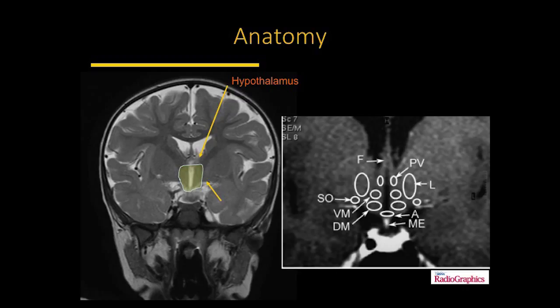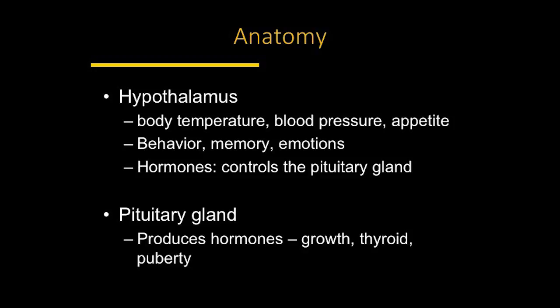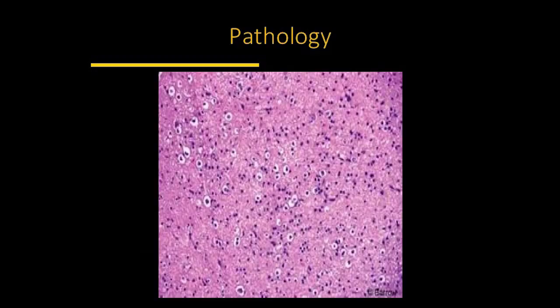That complexity explains why different symptoms arise depending on the location of the hypothalamic hamartoma. The hypothalamus controls body temperature, pressure, and appetite, and is also responsible for behavior, memory, and emotions. It releases hormones that control the pituitary gland, which sits right below it. The pituitary hormones in turn control many endocrine functions including growth, thyroid, and puberty.